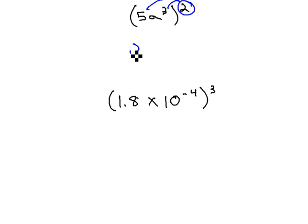We would then square the 5 to get 25, and then the power of a power rule says we will multiply the exponents on the a. 2 times 3 is 6, giving us 25a to the 6th.